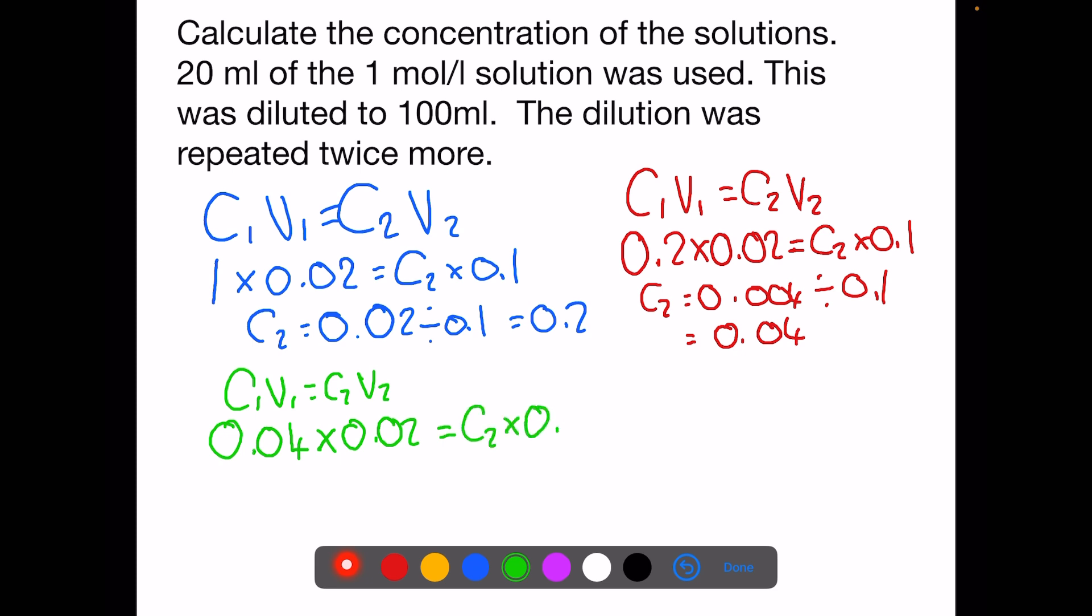This is multiplied by the volume that we're diluting to 0.1. C2 will now be 0.0008 divided by 0.1. So our final concentration will be 0.008.